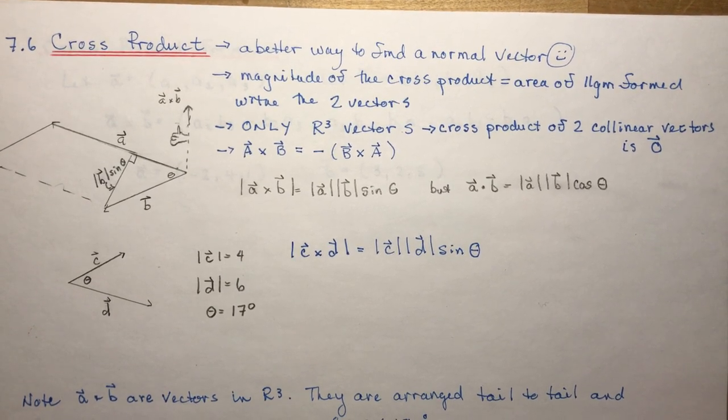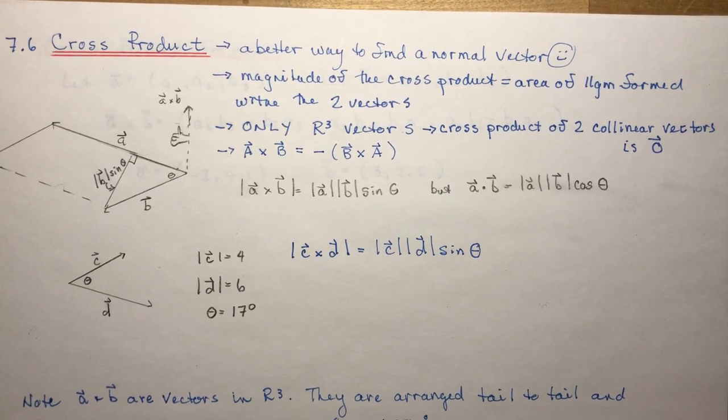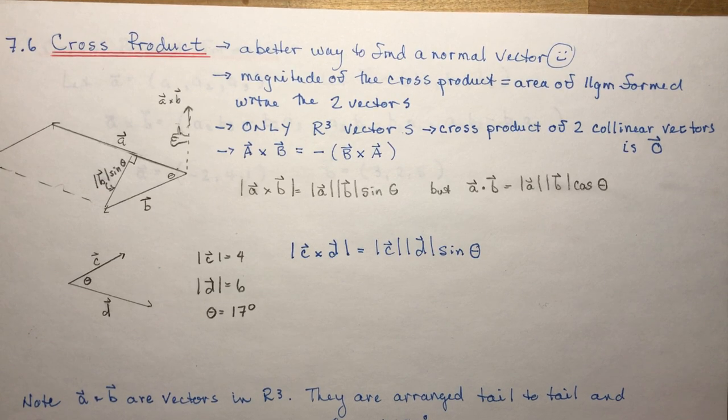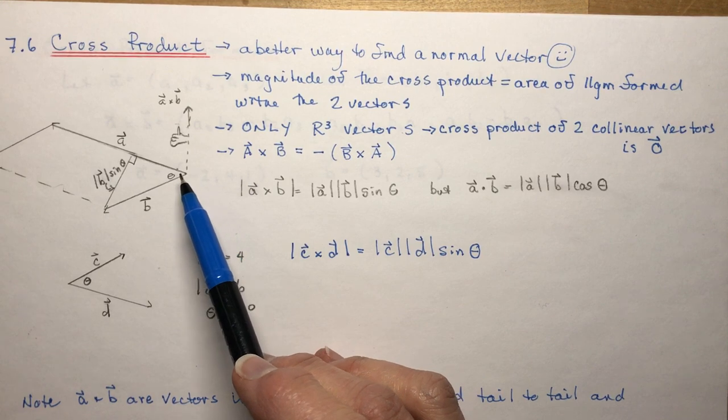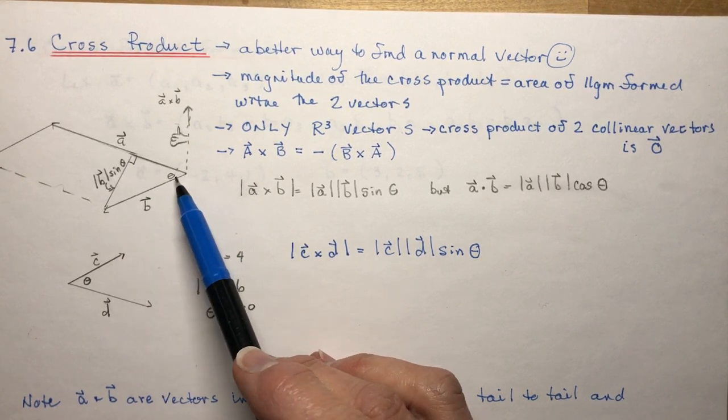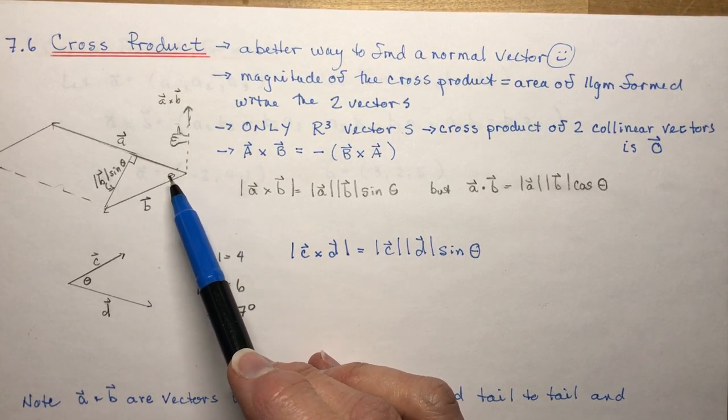7.6 the cross product. This lesson is going to show you a much easier way to find a normal vector. This is a normal vector to two vectors that are in R3.